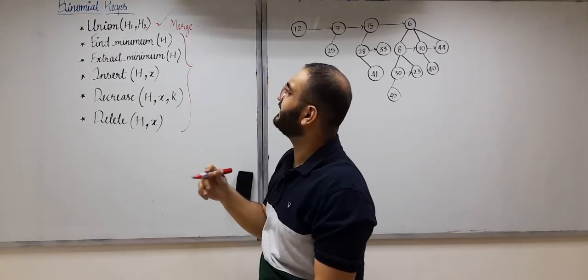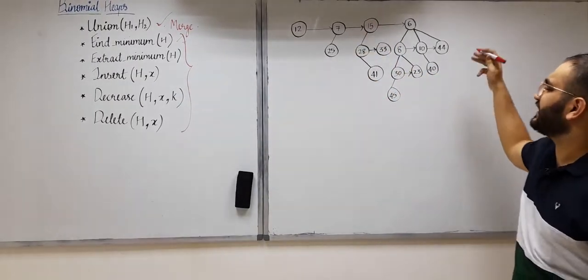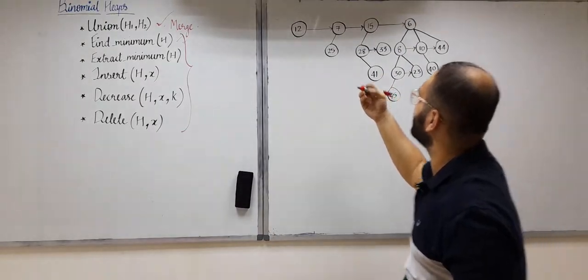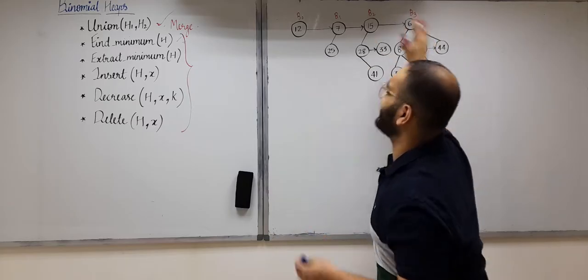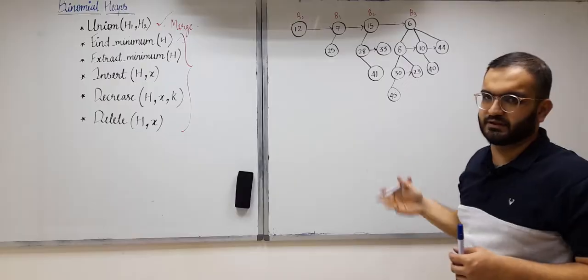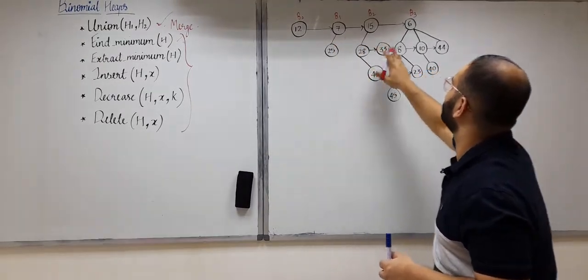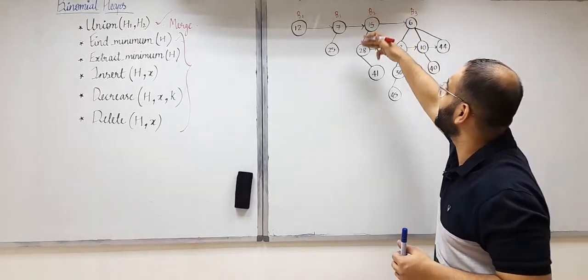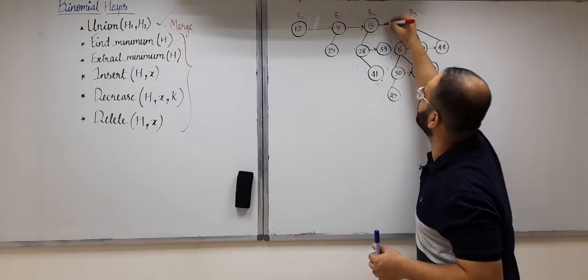The first operation is how do we find a minimum element in a binomial heap H. Suppose we are given this binomial heap H and we need to find the minimum element. This heap has B0, B1, B2, and B3. All these binomial trees separately follow the heap ordering property, which says the minimum element in a single binomial tree will be at its root.